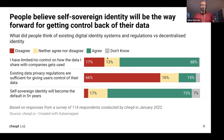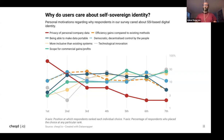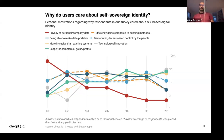What specifically do people care about in self-sovereign identity? They care about privacy of their personal or company data, efficiency gains compared to existing methods of proving identity or reputation online, and the ability to make data portable — not just a digital copy of a driver's license, but being able to move from a platform like Instagram to a competing platform with your reputation and social graph intact. It should be democratic, decentralized, and controlled by the people. Governance is a big part of this — not just technology. It should be more inclusive than existing systems and enable commercial models.